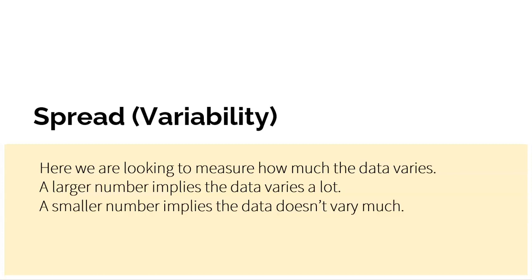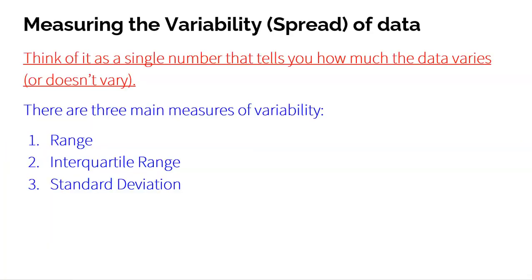Here we're looking to measure how much the data varies — we want a numerical value that tells us how the data varies. A large number would imply the data varies a lot; a smaller number would imply the data doesn't vary very much. There are three different measures of variability: range, interquartile range, and standard deviation.